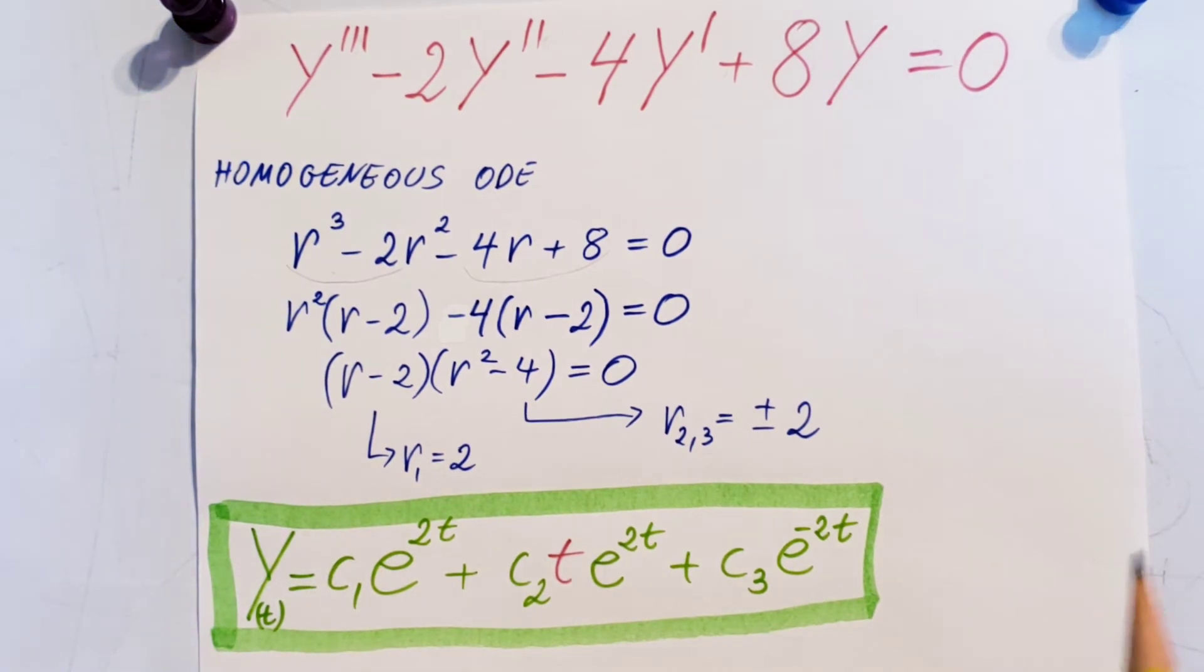From this we can go ahead and write up our solution to the homogeneous equation. From this 2, c1 e to the 2t. The 2 comes right here.